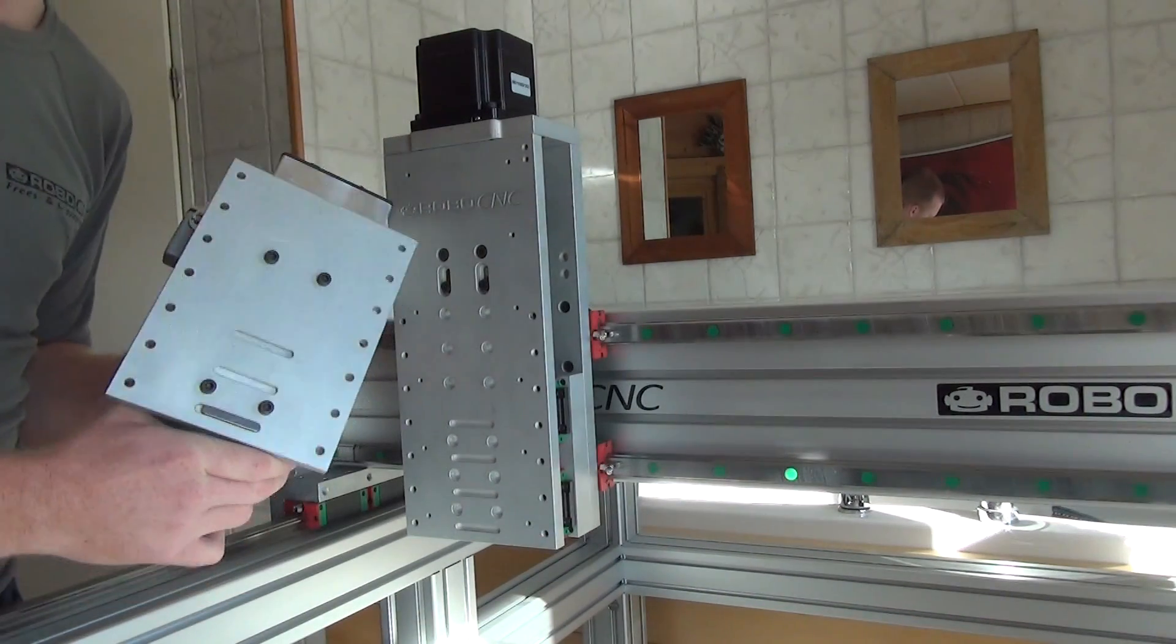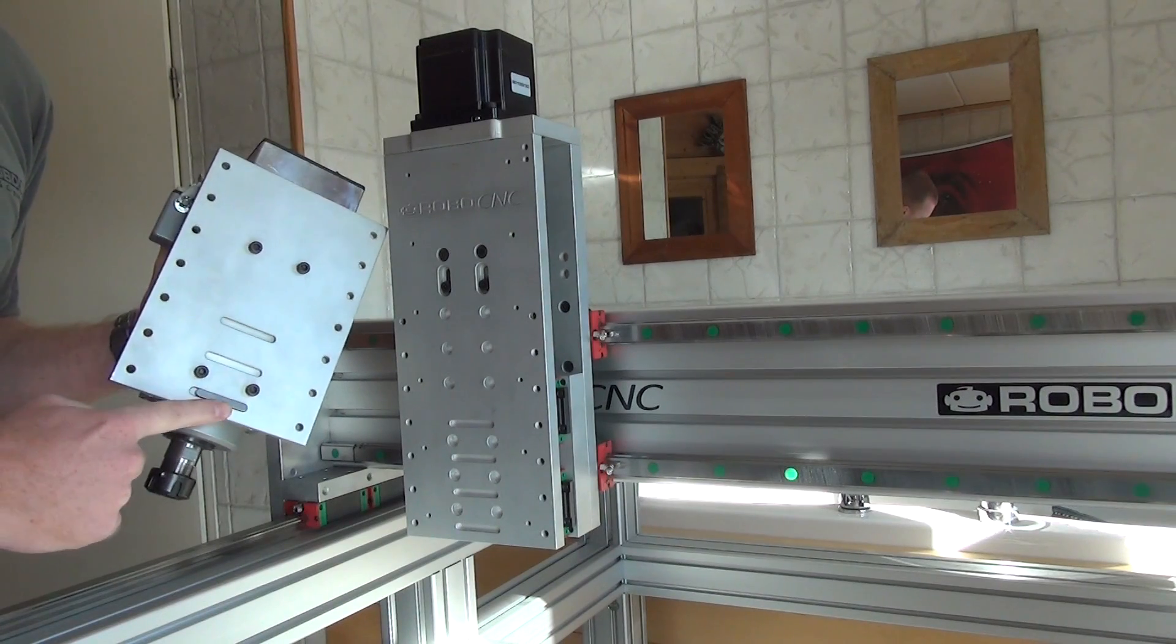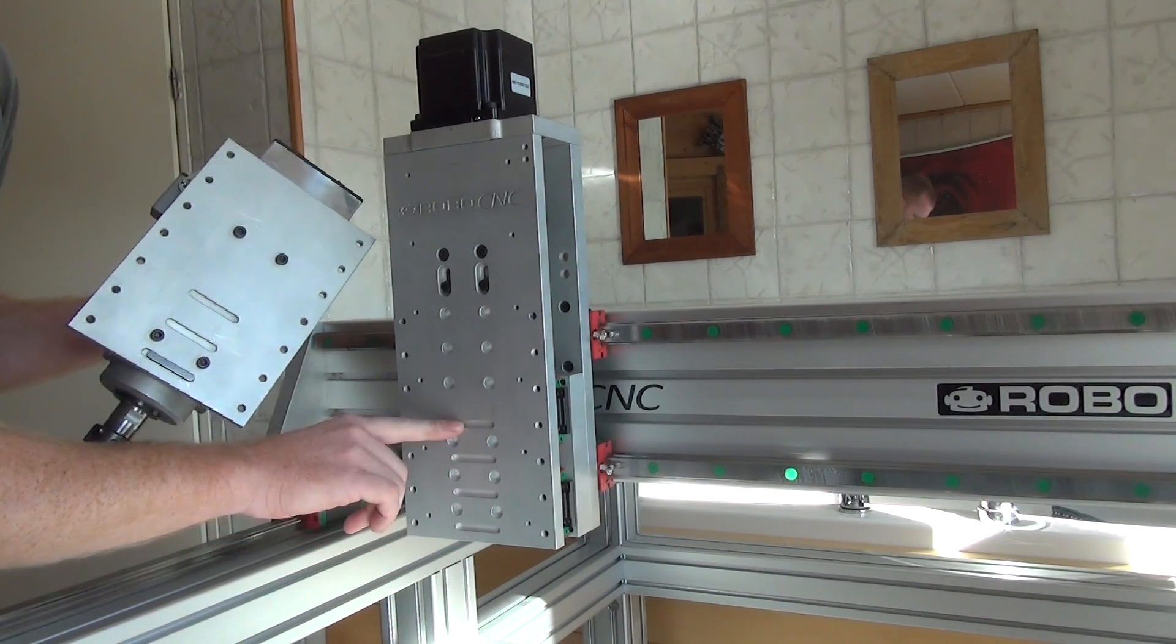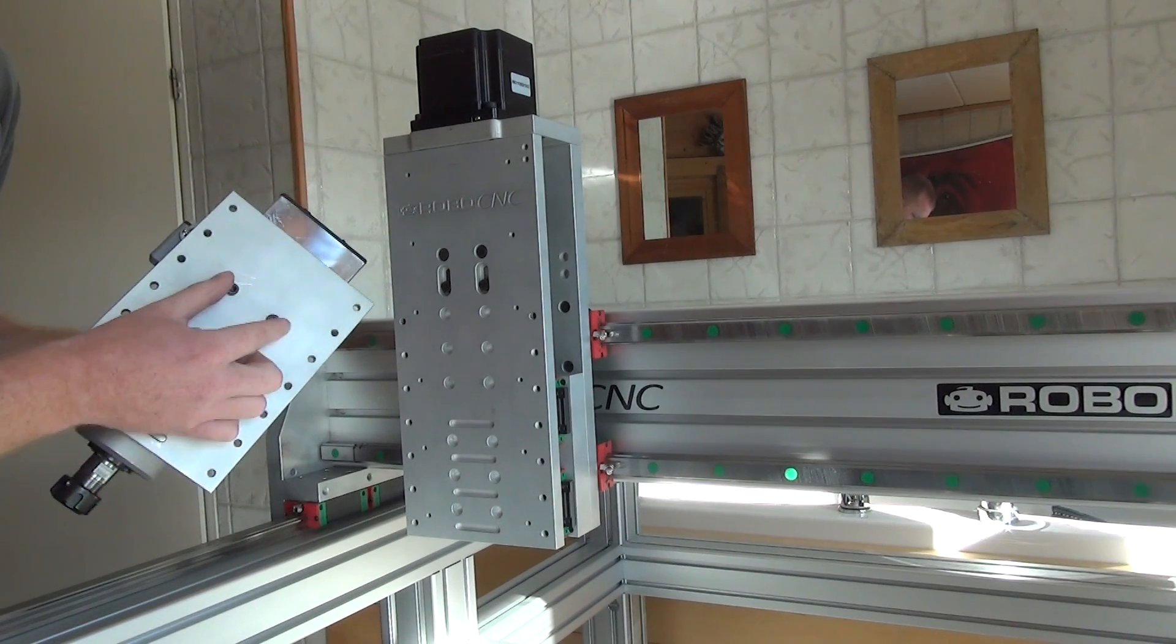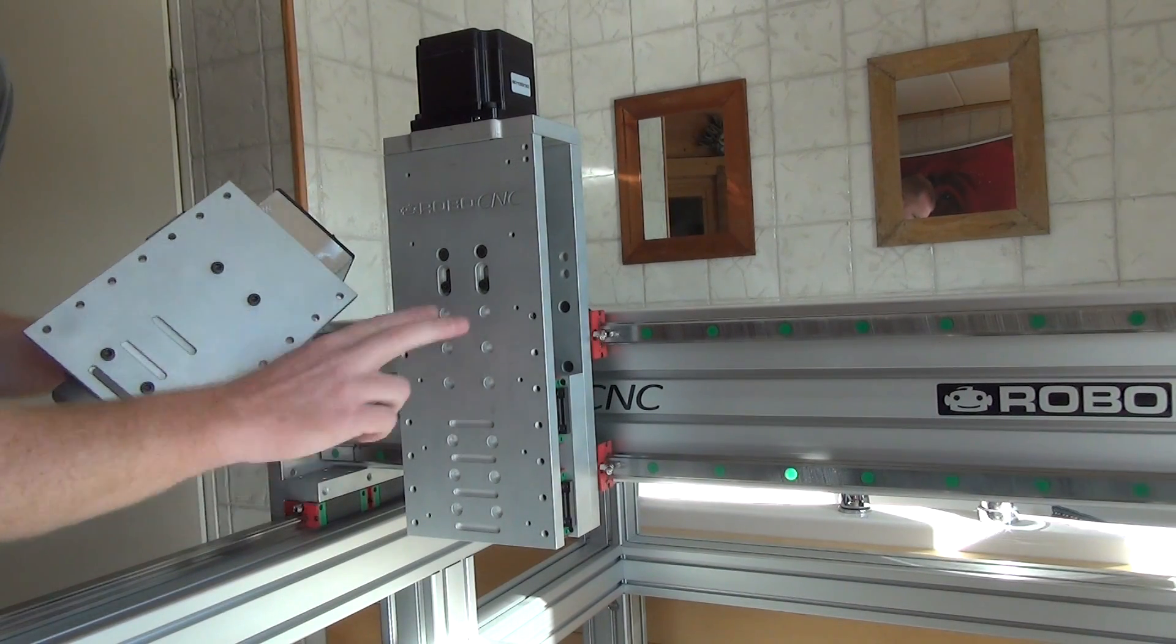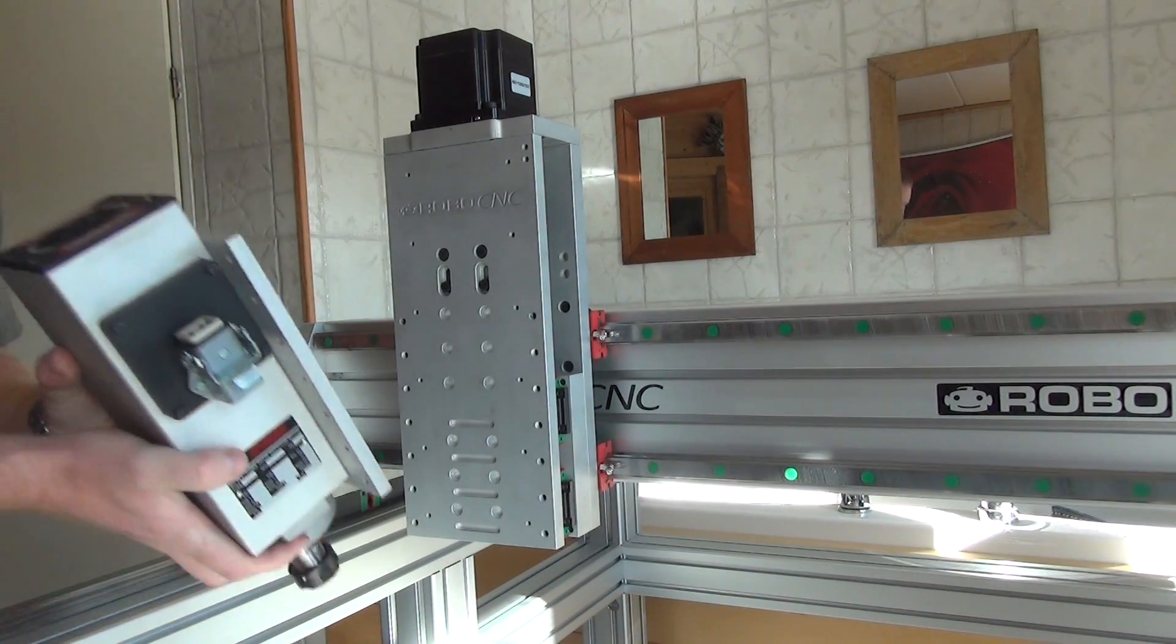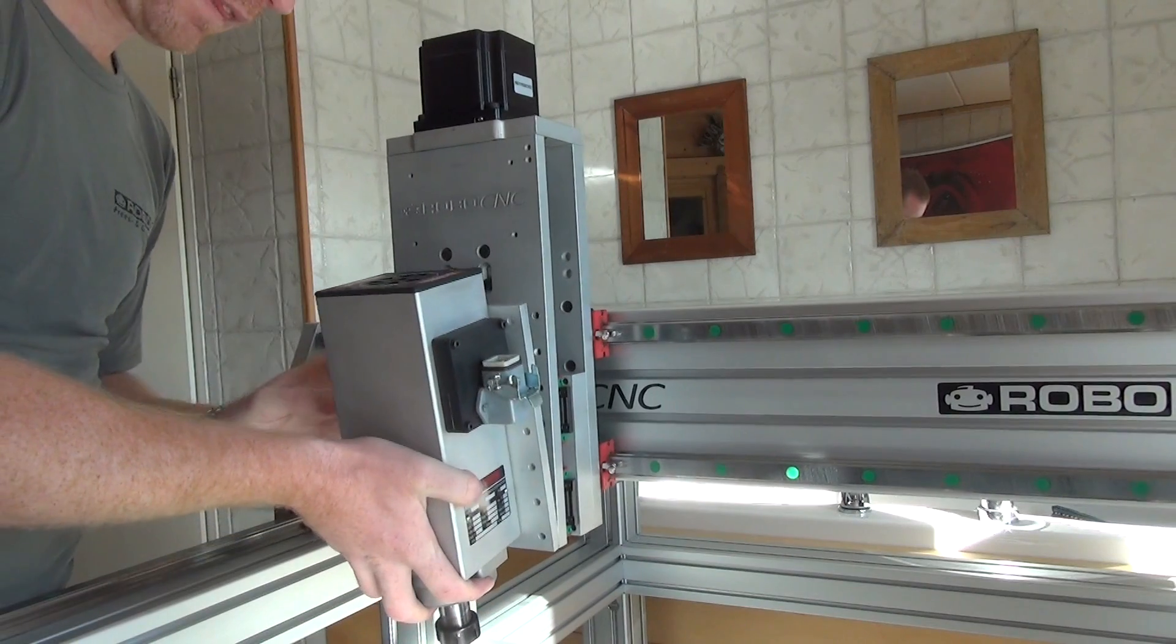So it's all mounted straight. As you can see, there's a key, a Woodruff key, in the plate, and there's slots in the front plate of the z-axis. The bolts that are used to mount the Techno motor can easily fit in these holes, so that's what these were for.